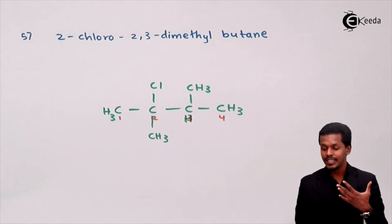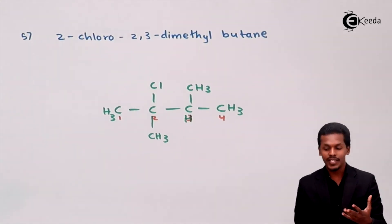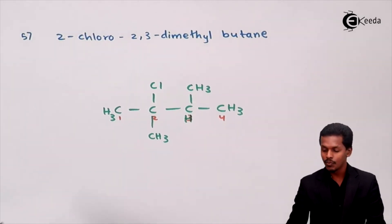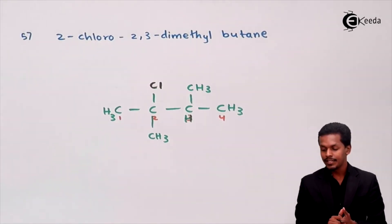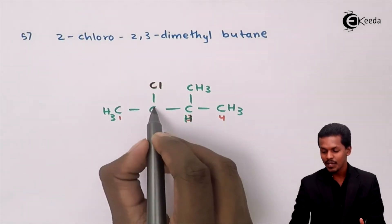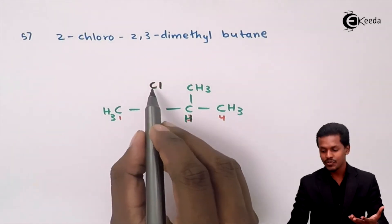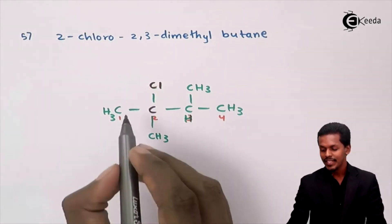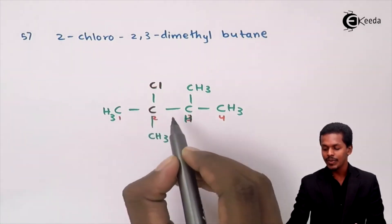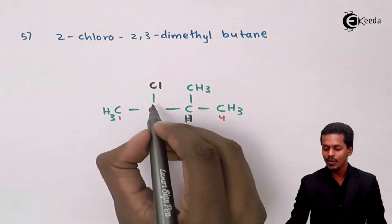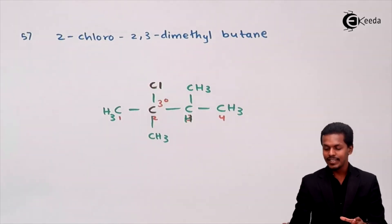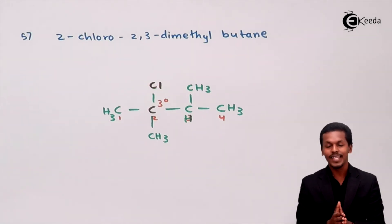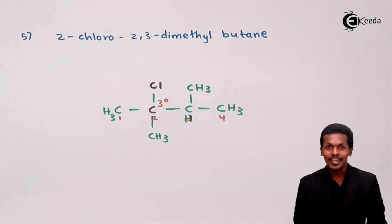This is a monohalogen derivative because only one halogen atom is attached to the overall molecule. Now for the classification: the carbon attached to the chlorine atom is surrounded by three carbon atoms forming single bonds, making it a tertiary carbon atom. Since the chlorine is attached to the tertiary carbon, this is a tertiary alkyl halide.